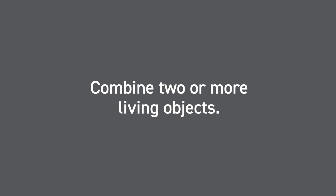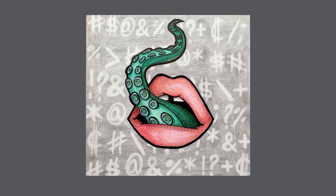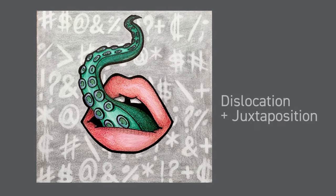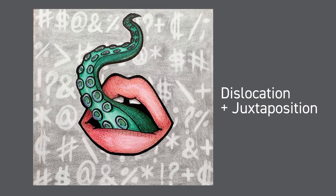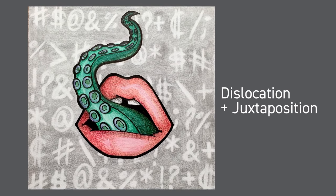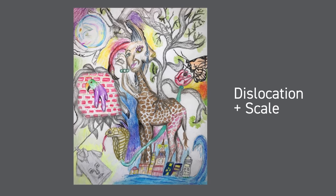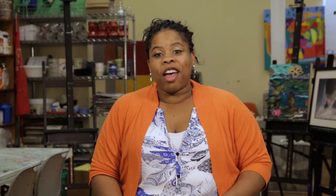Now it's your turn. How do you get started? Do you get the idea that the surrealists were looking for something puzzling, making a statement, or just having fun? They were, and so should you. Let's have some fun — think about combining two or more living objects. That's what this student did. This art was created by a middle school student. It's called Rude Language, and it uses dislocation and juxtaposition while combining two living objects. Here's another work that combines living objects while using elements of dislocation and scale.